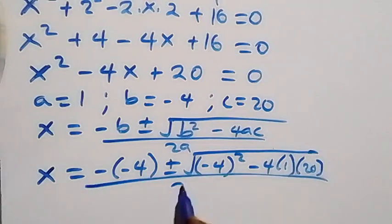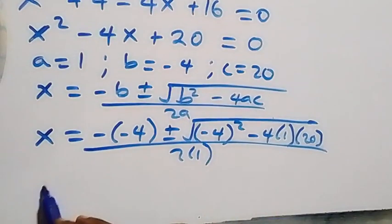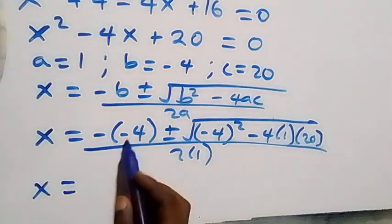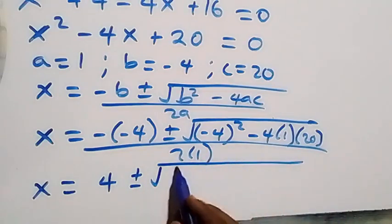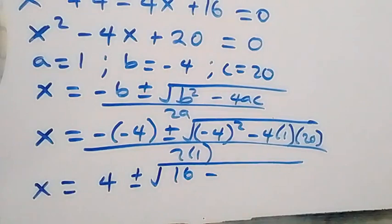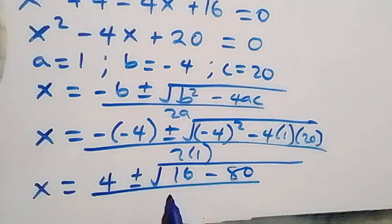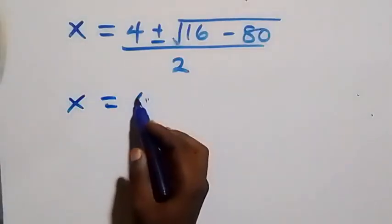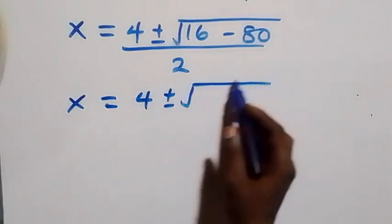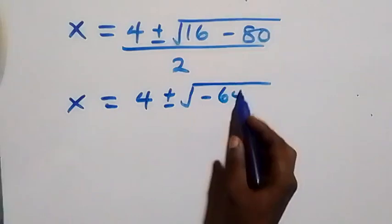This becomes x equals 4 plus or minus square root of minus 4 squared, which is 16, minus 4 times 1 times 20, that's 80, all over 2. So x equals 4 plus or minus square root of 16 minus 80, which is minus 64, all over 2.